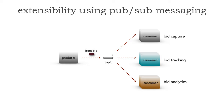Same thing with analytics. If we want to start running analytics, the data is there — just go and grab it. The bid analytics as a durable subscriber would subscribe to that topic as well, getting all the bids to run analytics. With publish and subscribe messaging, we've changed the topology but provided extensibility, eliminating the changes needed in both the topology and the producer for any new feature we want to add.